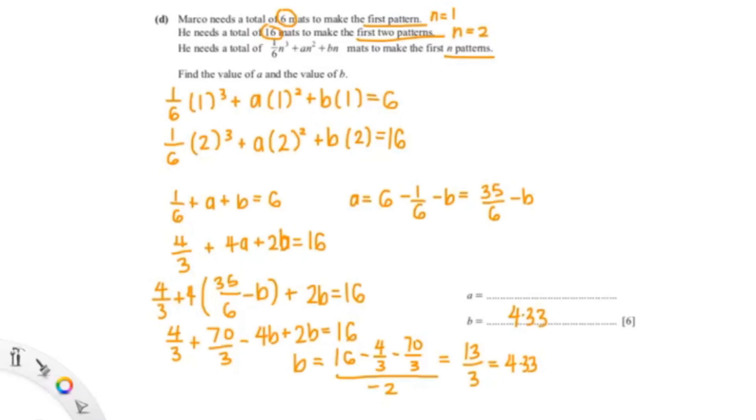So that gave me an answer of 13/3 which I turned into decimal giving me 4.33333, and then just round it to 3 significant figures. So for a, since we said to find a is 35/6 minus b, so now we can just put our value. So 35/6 minus 13/3 gives me 3/2 which is 1.5.